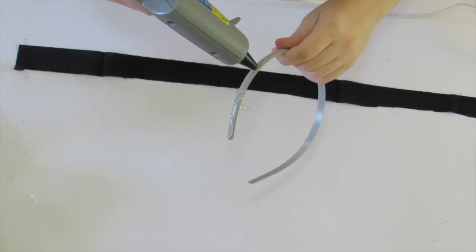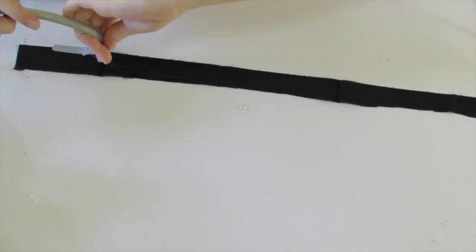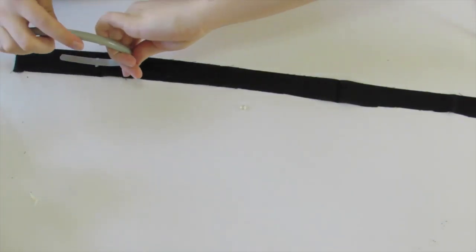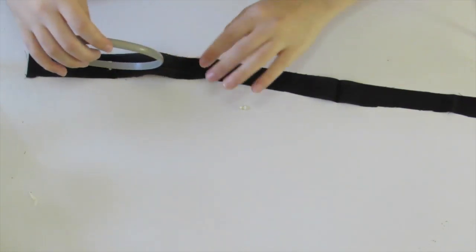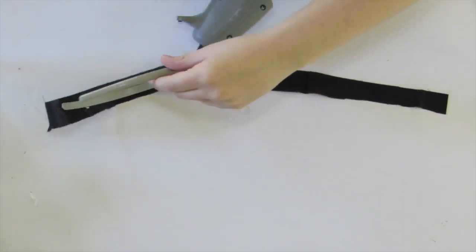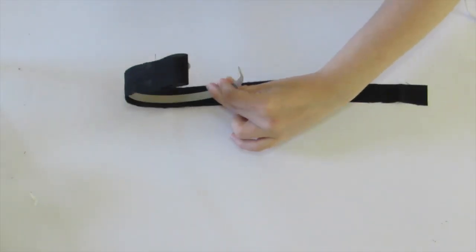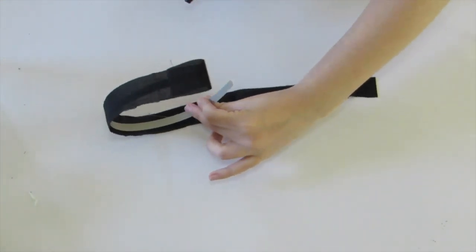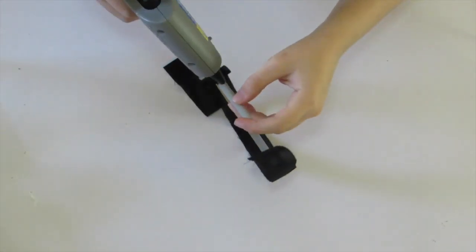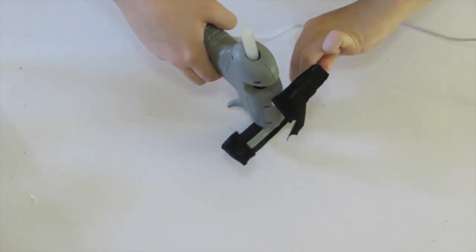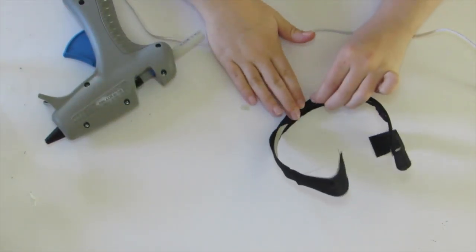Once your hot glue gun is heated up, go ahead and hot glue the outside of your headband and then roll it onto the strip of fabric. Continue doing this until the end and then wrap the sides around as neatly as you can. I recommend going the easier route and just buying a black headband, but this is what you can do if this is all that you have.